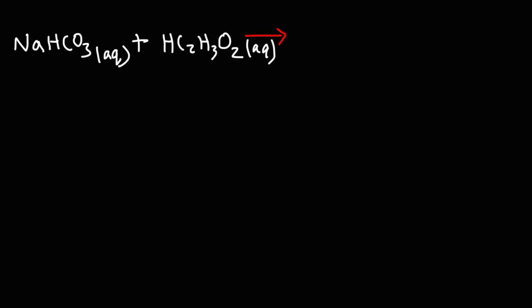In this video, we're going to talk about the reaction between sodium bicarbonate and acetic acid. Sodium bicarbonate is also known as baking soda. Acetic acid is vinegar. We're going to predict the products of this chemical reaction and balance it and also write the net ionic equation.